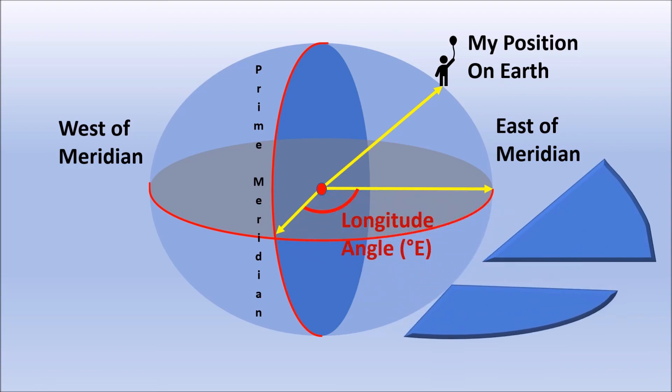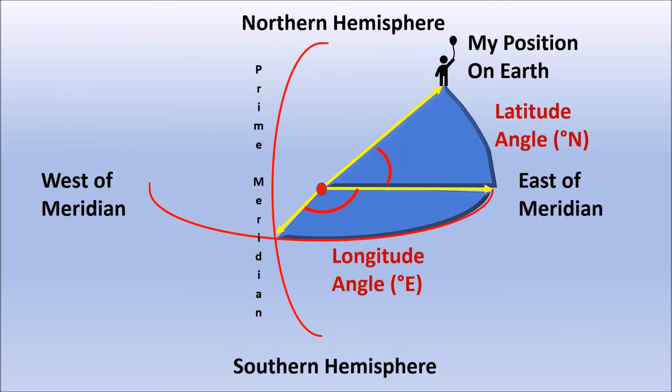So we can say that longitude is a horizontal angle from the prime meridian, east or west, on the equatorial plane. As I am standing on the eastern part of the globe, my longitude will be degrees east.